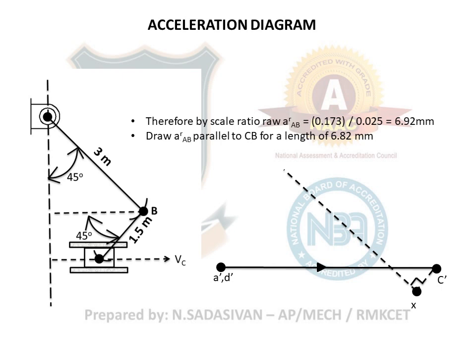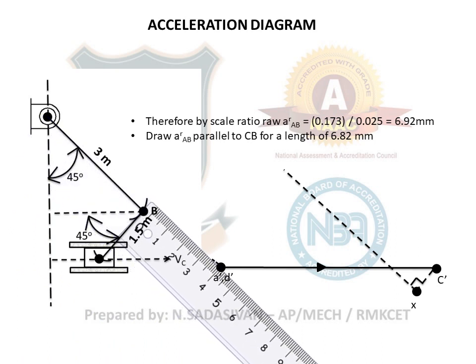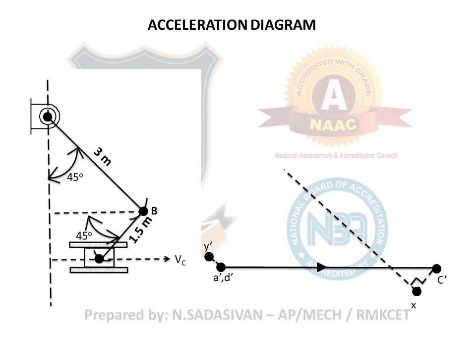Similarly for link AB: the radial component is 0.173 m/s². Scaling by 0.025, that gives 6.92 mm - a very small line. Draw a line from A-dash parallel to link AB for a distance of 6.92 mm and name that point Y. Then draw a perpendicular to that for the tangential component of AB. The two tangential component lines - for BC and AB - intersect. Connect these to form the resultant acceleration vectors, which are the resultant of the radial and tangential components of the two links.